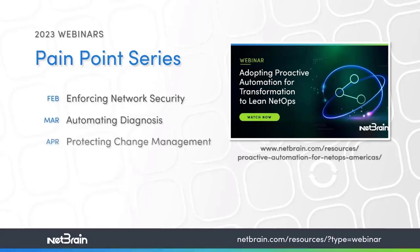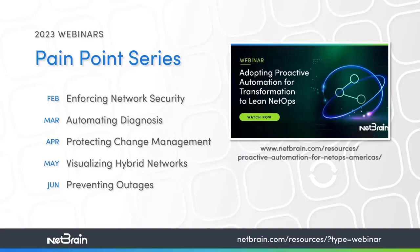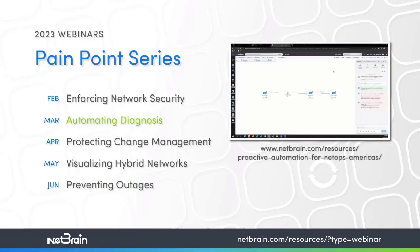Our tips and tricks act as a sort of companion piece to our ongoing pain point series, where each month we tackle a common pain point in network operations and how we utilize NetBrain to address them. These include webinars on network security, protected change management, hybrid network visualization, and outage prevention. Be on the lookout for the last two pain point webinars later this May and June and be sure to register. This tips and tricks complements our automated diagnosis webinar from March, Adopting Proactive Automation, which is available on demand from our website. So if you missed it, we encourage you to check it out.